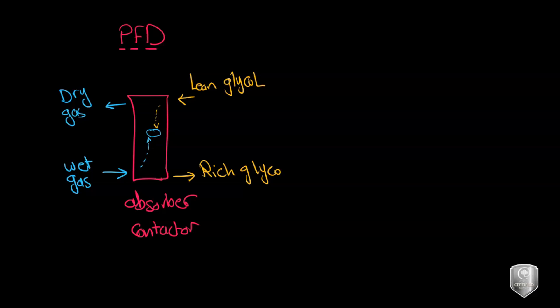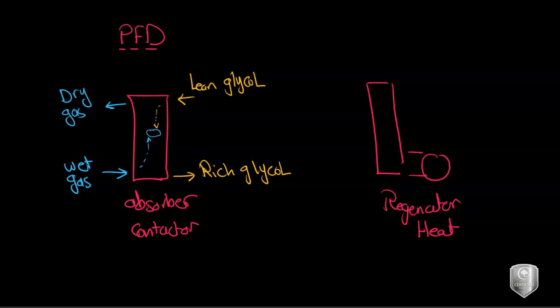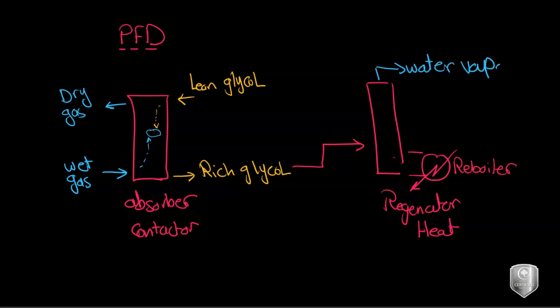Our lean glycol will exit as a rich glycol — glycol with water vapor. After that this glycol is fed to a regenerator. At the regenerator we apply heat, and at the bottom you will most of the time have a reboiler to increase the temperature. The heat added forces the rich glycol to release the water vapor, so you have the water vapor separated from the glycol.